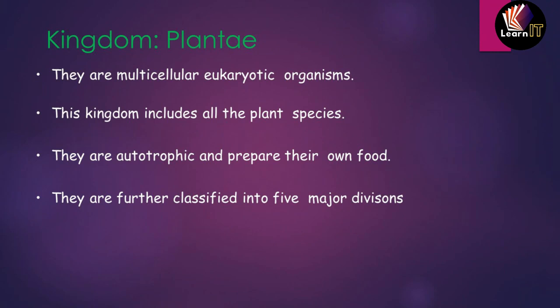Monera, Protista, and Fungi have relatively simple structures — mostly unicellular, though some Fungi are multicellular. As we move forward, the next two kingdoms are Plantae and Animalia, which are multicellular organisms with very complex body structures. All plant species in the world come under Plantae; they are multicellular eukaryotic organisms that prepare food via photosynthesis, making them autotrophic.